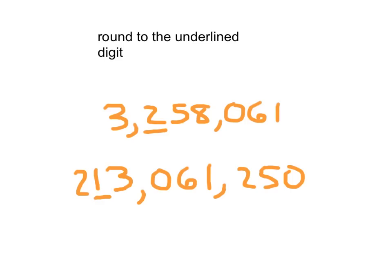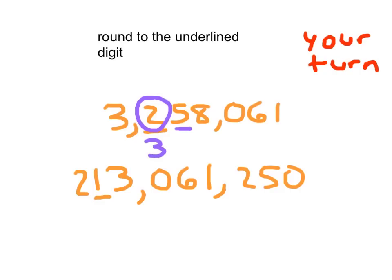For both of these problems, it says to round to that underlined digit — this is your turn as well, go ahead and hit pause while you work on these. For that first one, we circle the 2 because that's what we are rounding to, then underline the 5. Since 5 is in the 5–9 range, add 1 is the game, so the 2 becomes a 3. We flex our muscles like a hero, digits to the right change to 0, and all other digits stay the same. So 3,300,000 is our answer.